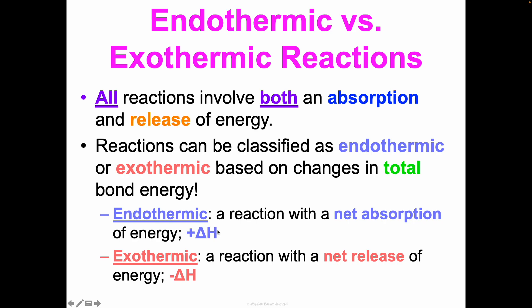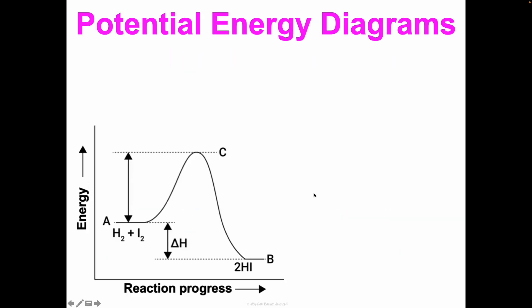Exothermic reactions, on the other hand, have a net release of energy. Energy is absorbed to break bonds, it is released as bonds are formed, and overall more energy is released than absorbed — so we classify it as exothermic. Potential energy diagrams help so much with understanding the energy exchanges in a reaction, showing changes in the chemical potential energy between bonds throughout the course of a chemical reaction.